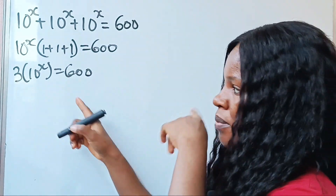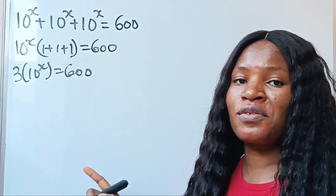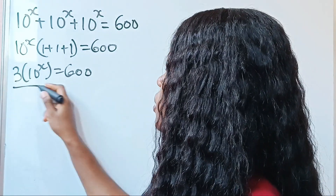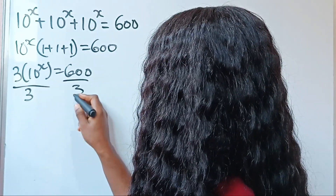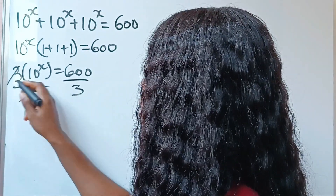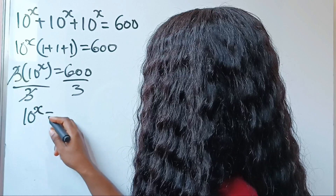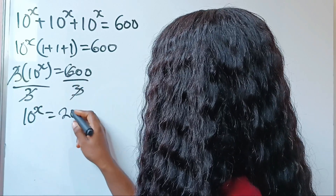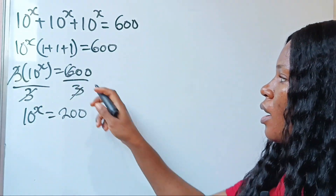Now, let's divide both sides of the equation by 3. When we do that, we have divided by 3 divided by 3. So we have 10 to the power of x is equal to 200.